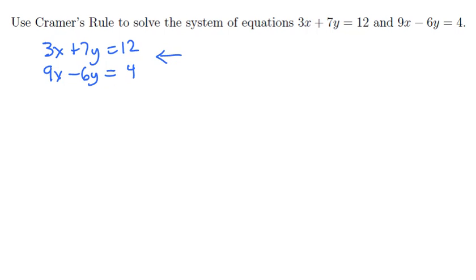That means they're the exact same thing as a matrix multiplication. The matrix [3, 7; 9, -6] times the vector [x; y] is equal to the vector [12; 4].